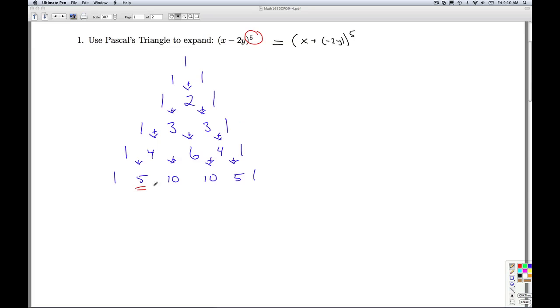So we have two steps. We have the setup and the cleanup. So x minus 2y to the fifth equals. So x plus negative 2y to the fifth equals 1 x to the fifth times this to the zero power.